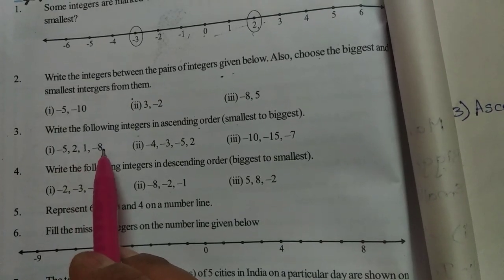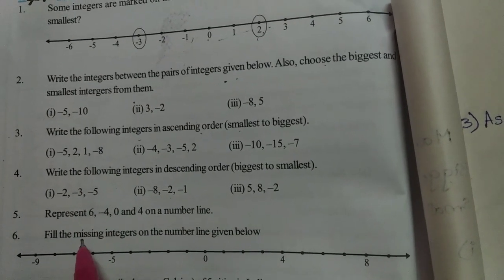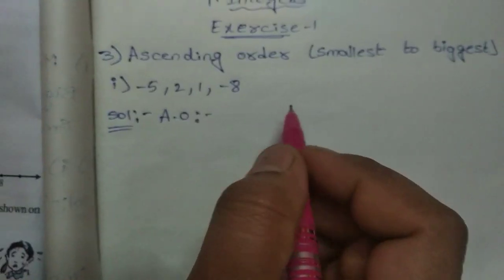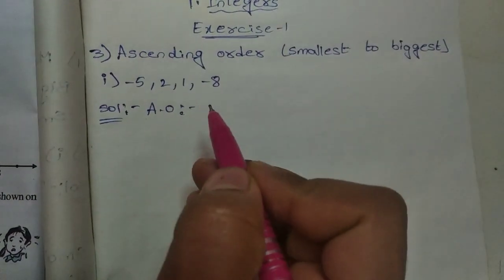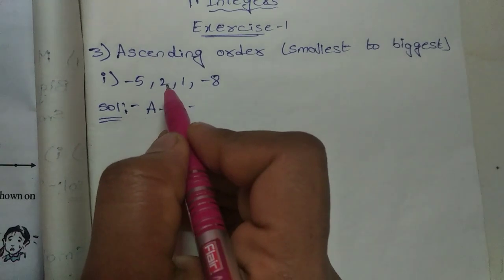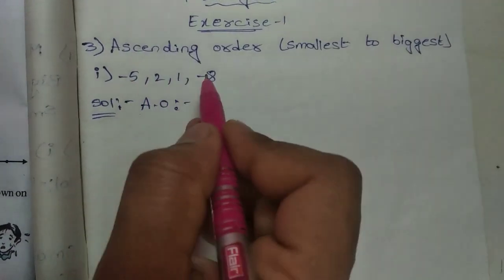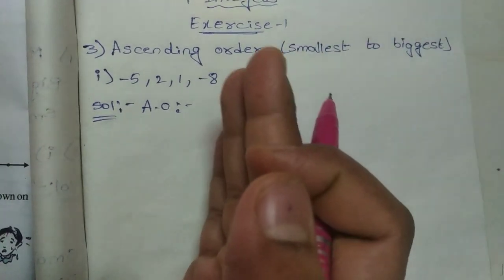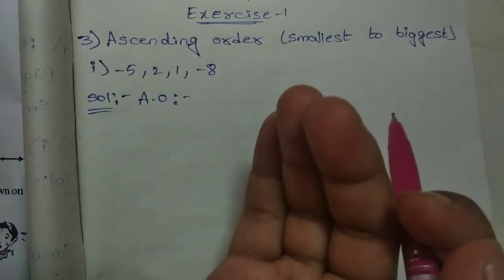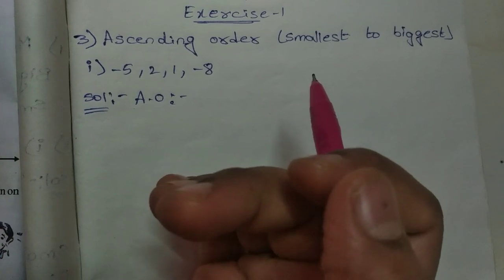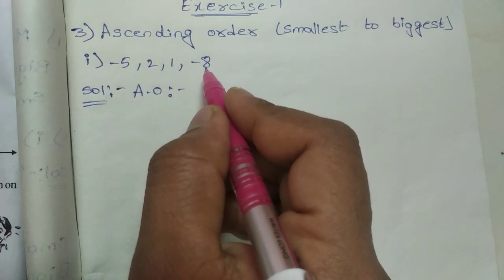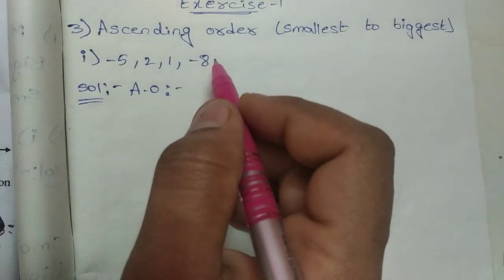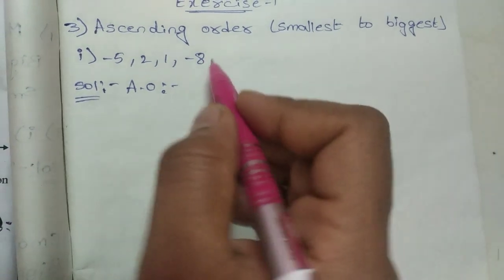First question: minus five, comma two, comma one, comma minus eight. For ascending order, smallest to biggest. Only look at the negative integers first — negative integers are always less than positive integers, so they come first.